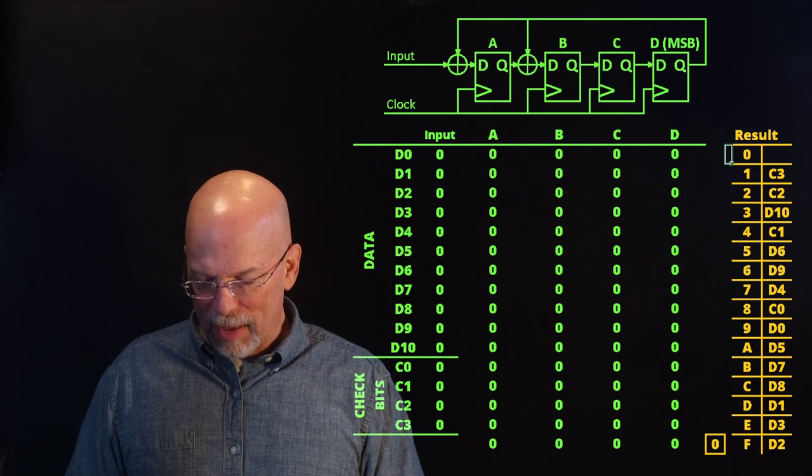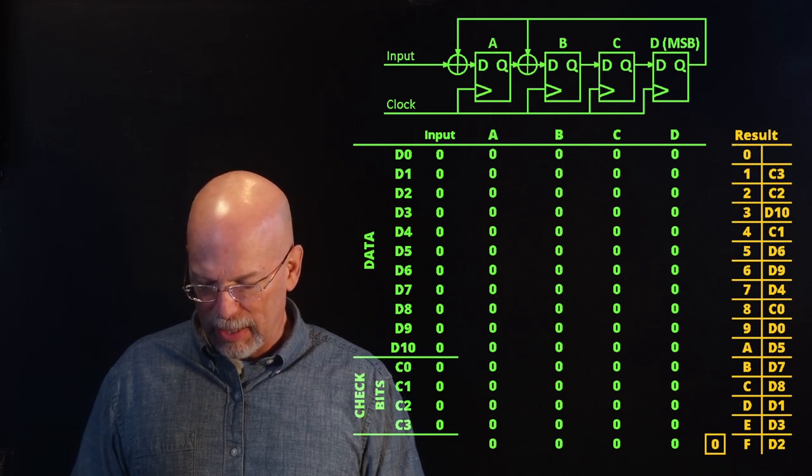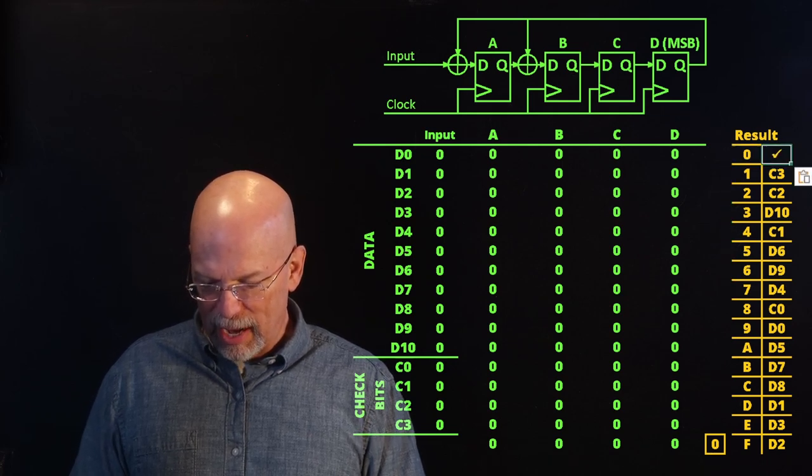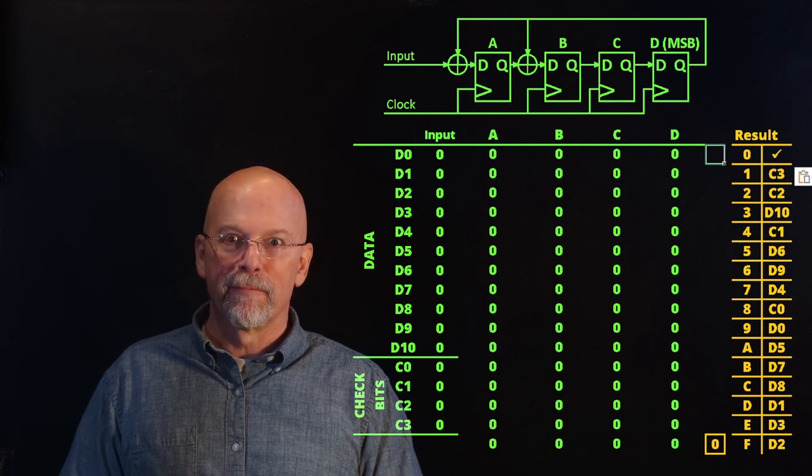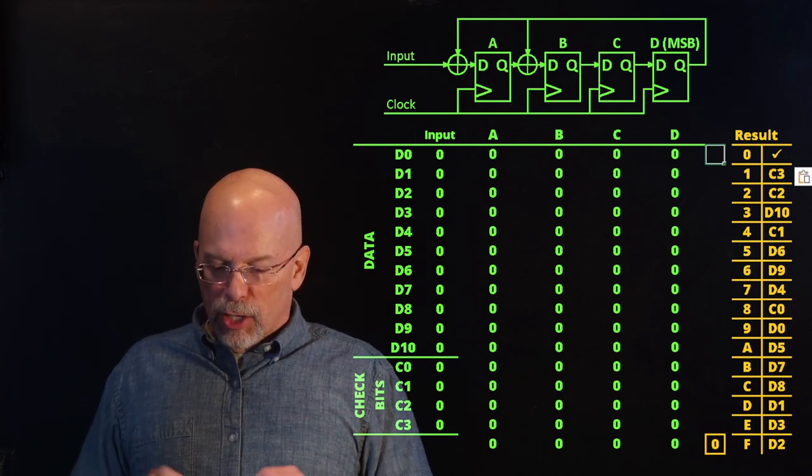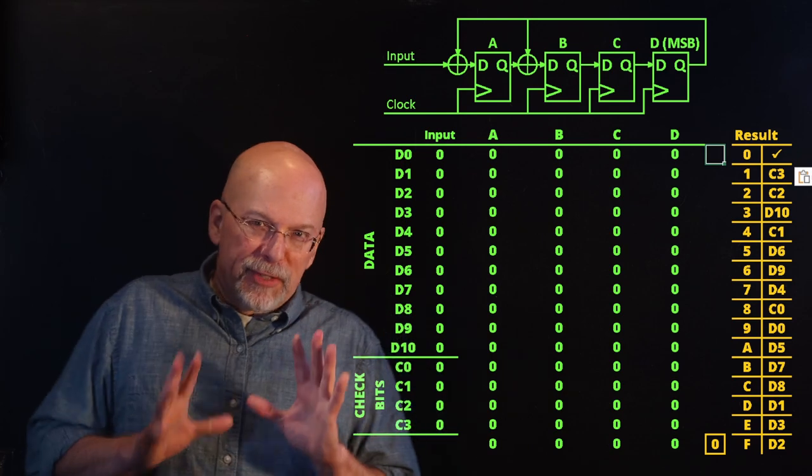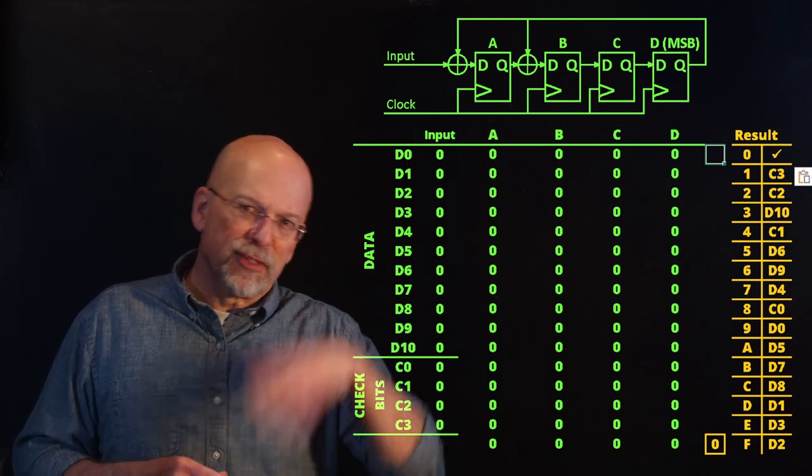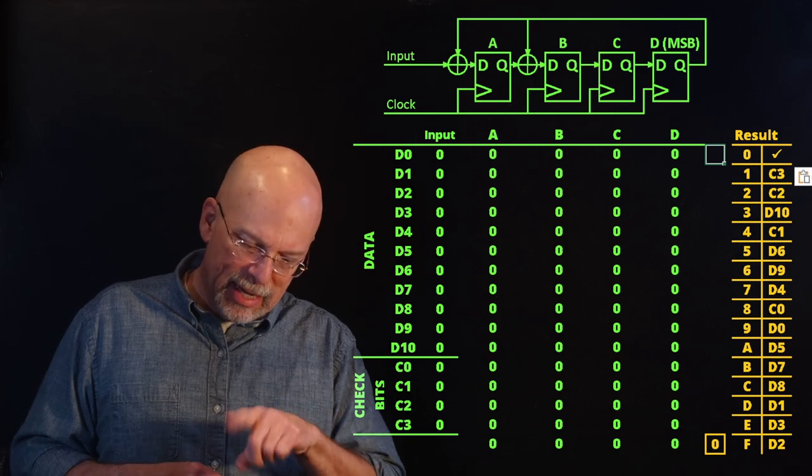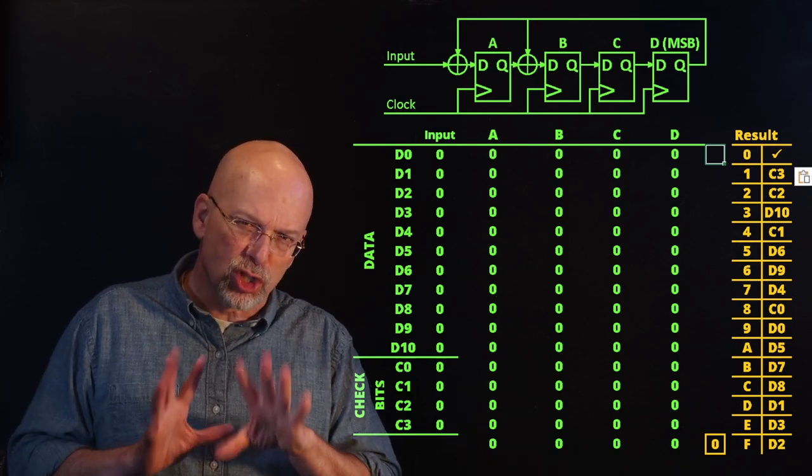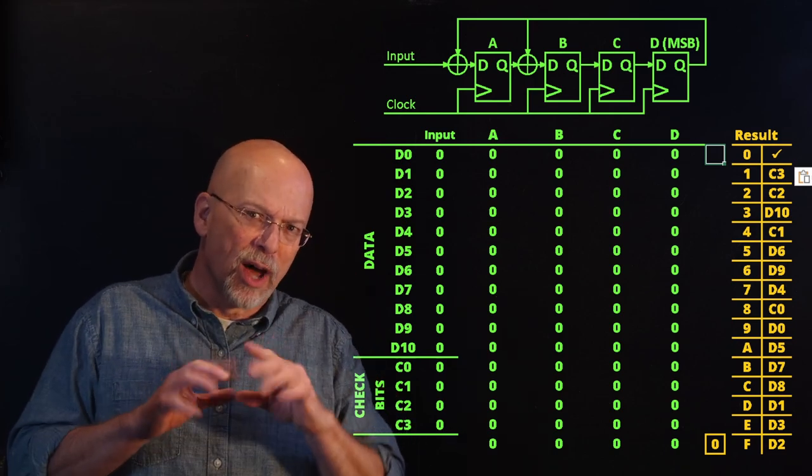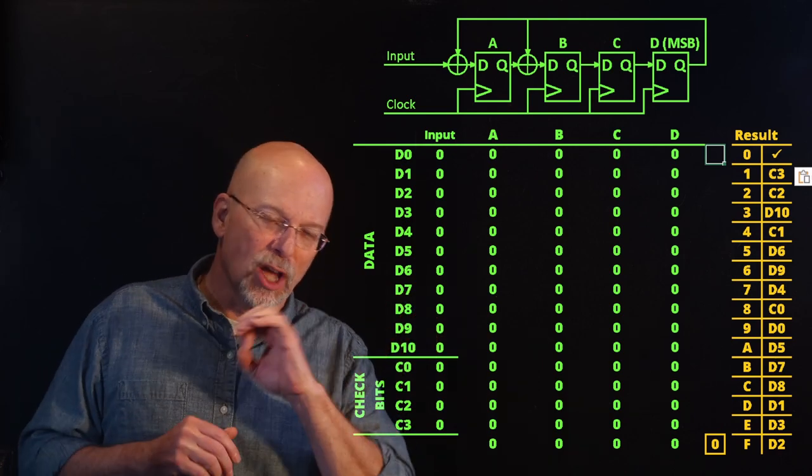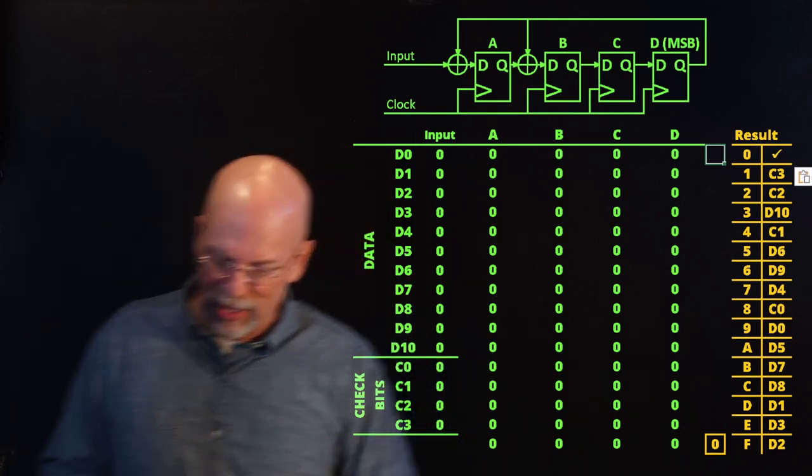Now, what about this top case? Well, this top case right here, that is the everything's okay case, right? There were no errors. So for my 15 bits, my 11 bits of data, my four bits of check bits, there are 15 possible bits that can flip. That takes care of all 15 of those checks, which have one or more ones in the result. The all zeros case, that's the everything's okay case.